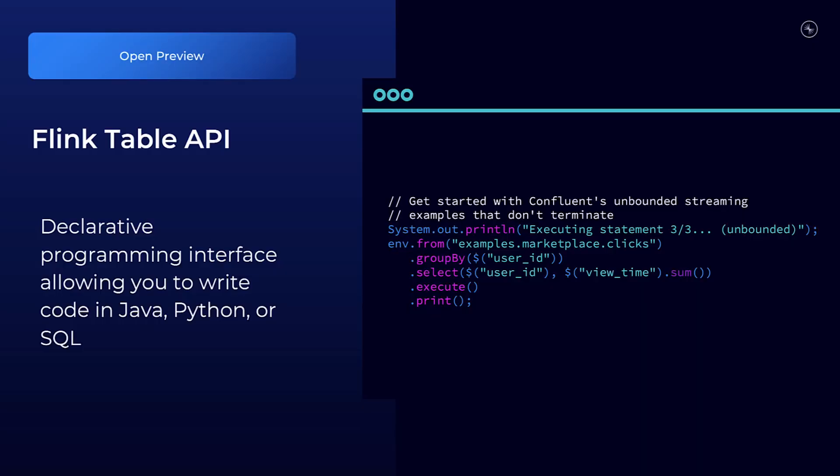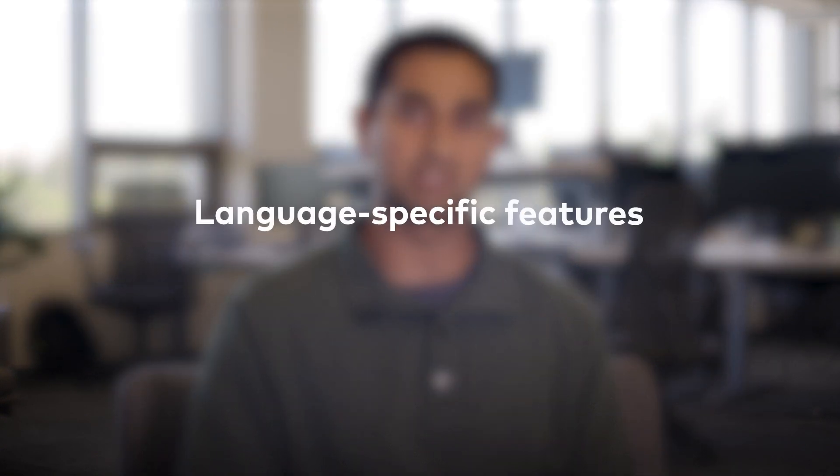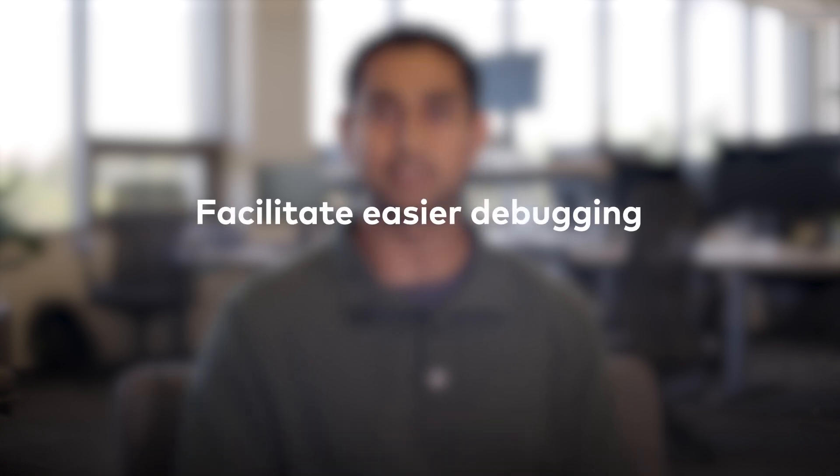Say hello to Table API. You can now build Flink apps and functions in Java and Python, in addition to using SQL syntax with Flink SQL. We're making it easier than ever for you to build in your language of choice so that you can take advantage of language-specific features, maximize developer efficiency, and facilitate easier debugging.